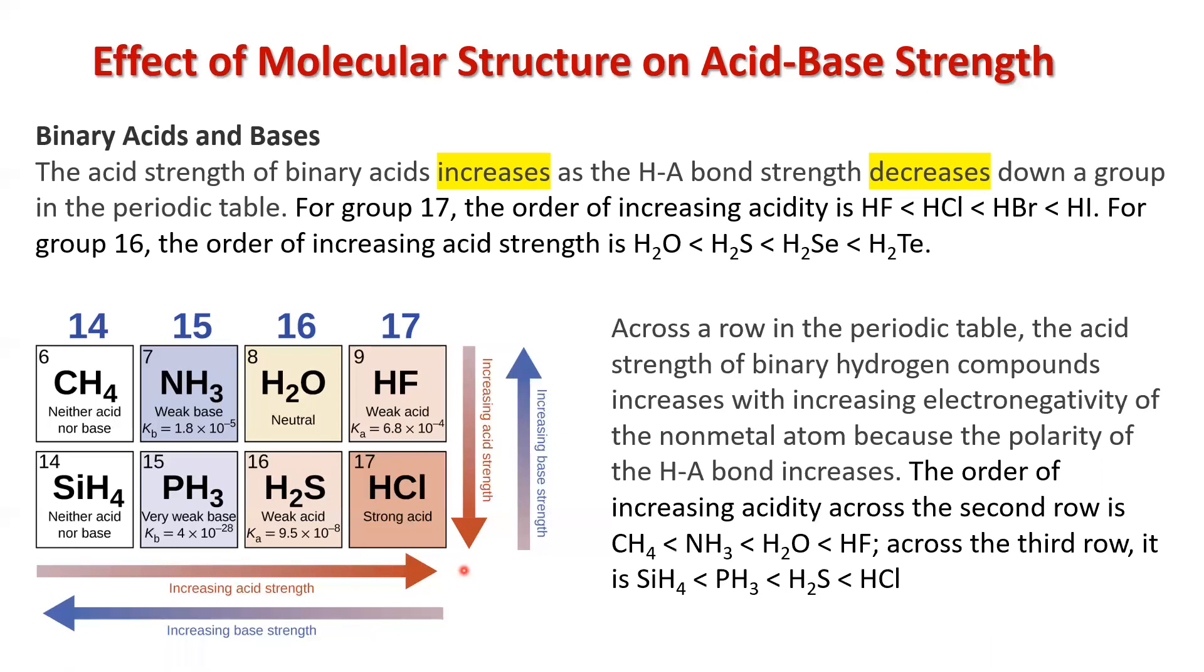Bases are the reverse. So the strongest bases are the weakest acids, and they would be the farthest to the left and the farthest to the top. So the strongest base would be at the top. The strongest acid would be at the bottom.